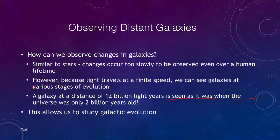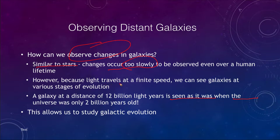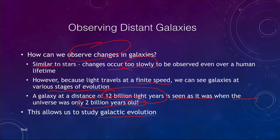One of the big problems in observing changes in galaxies is something similar to what we had when we looked at stars — all of the changes occur far too slowly to be observed over a human lifetime. However, because light travels at a finite speed, we get to see galaxies at different stages in the past, meaning we can look at a galaxy 12 billion light years away and see it as it was when the universe was only 2 billion years old. This allows us to study the evolution of galaxies over time, looking at distant galaxies at various stages of their evolution.